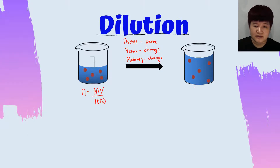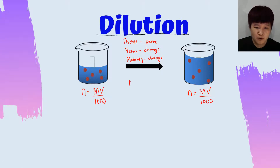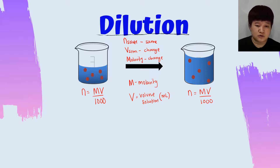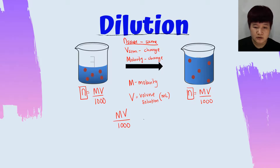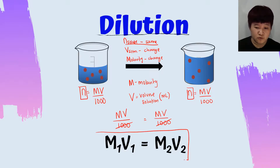In the formula n = MV/1000, M is molarity, V is volume of solution and the unit of volume must be in millilitres. The 1000 converts the volume from millilitres to litres. Since we said that the number of moles is the same — n is equal — we will have MV/1000 equals MV/1000. We can cancel off the 1000, and therefore we get the formula M1V1 = M2V2, where M is the molarity.